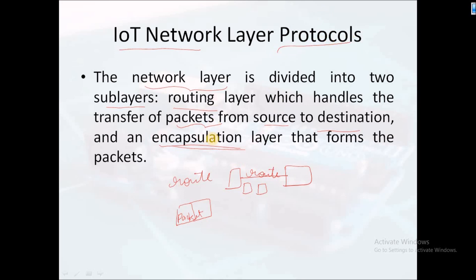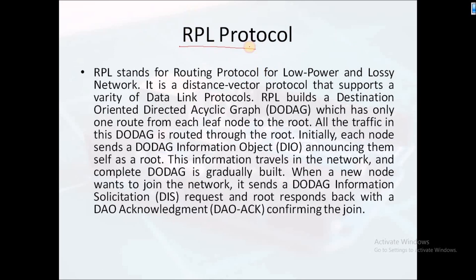Now, which network layer protocols are used in IoT? Specifically, which protocols are used at the O-level? The first protocol is the RPL protocol. RPL stands for Routing Protocol for Low Power and Lossy Networks. It is a distance vector protocol that supports a variety of data link protocols.